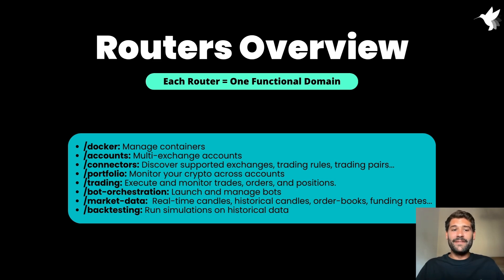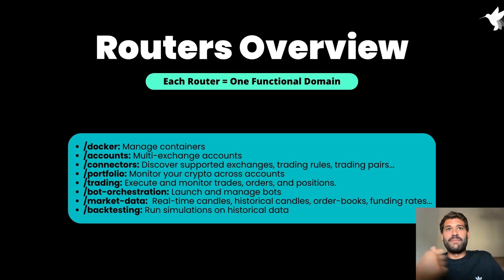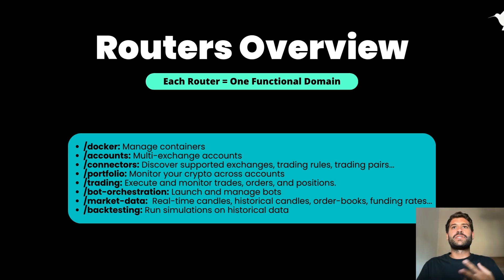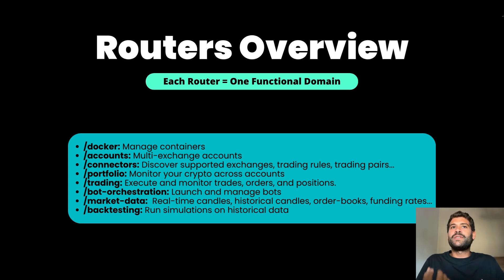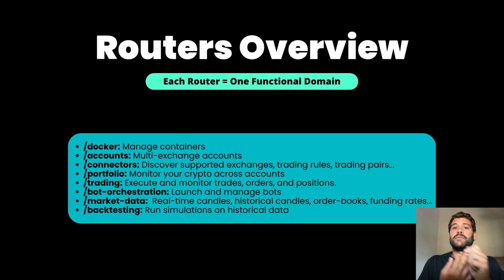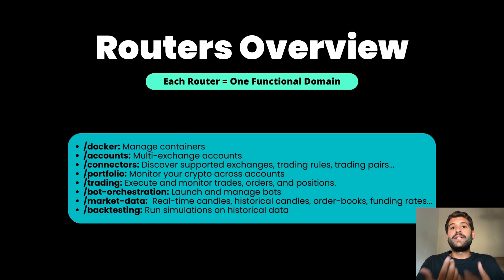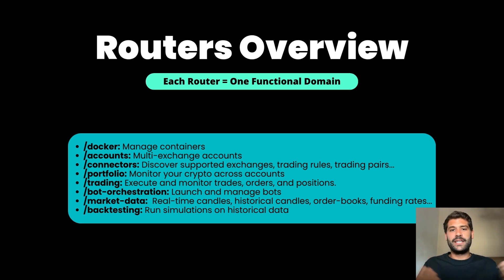The trading router is probably the best addition of this API because it lets you trade from all the connectors available in Hummingbot with just a single API request. Before, if you wanted to do a simple rebalance, you'd need to run a full strategy with the order book and order management system. Now it's just a connector with the order management system running. You can set the position mode, set the leverage, execute limit or market orders, and get the status of your orders. There is a built-in order management system that works for 40+ exchanges and also collects funding rates.